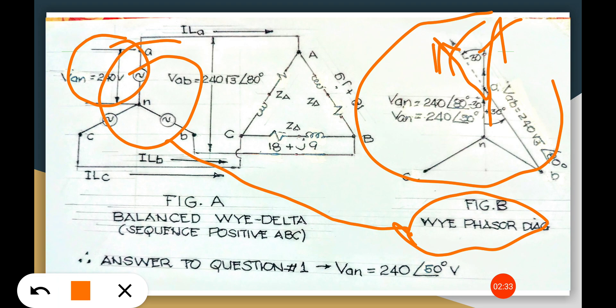What does it mean? It tells us that this Va voltage of 240 here, the Va voltage here, is lagging or less than 30 degrees and the Vab is 240 at 80 degrees.